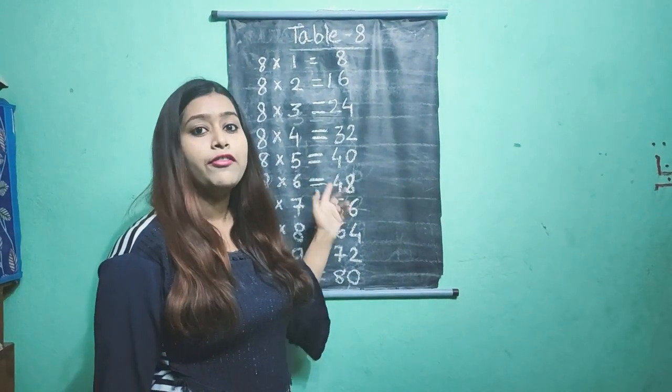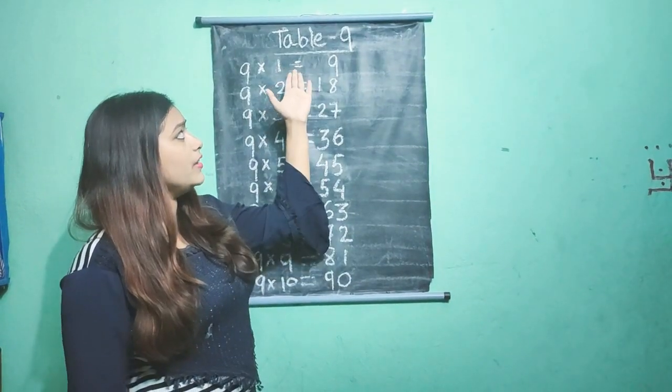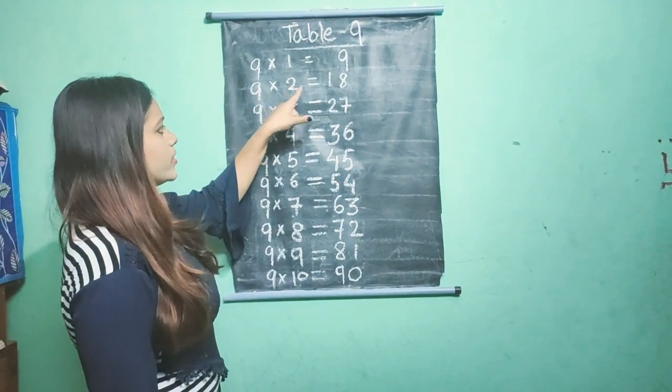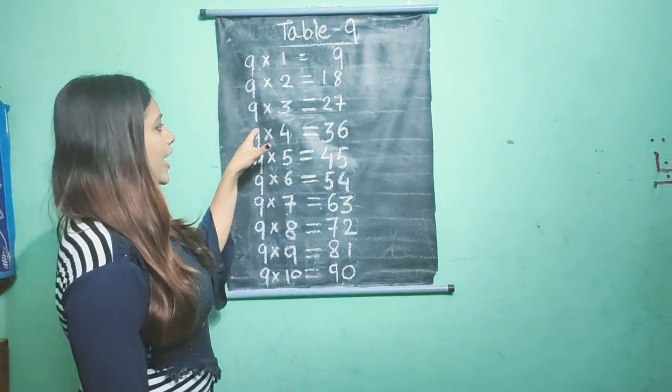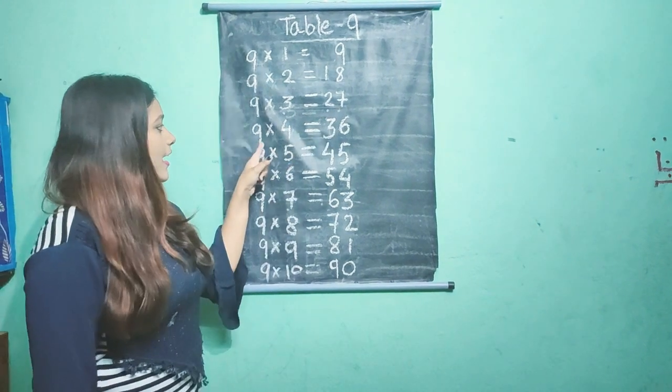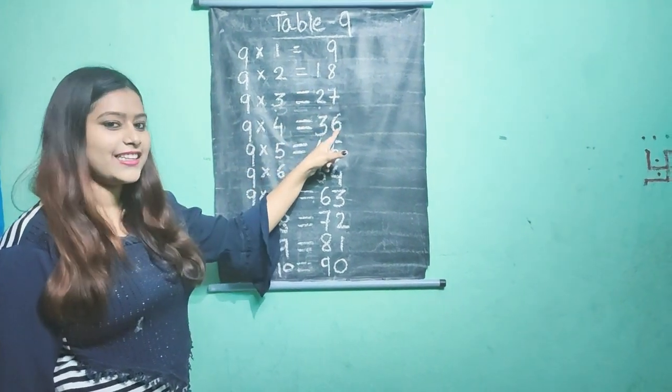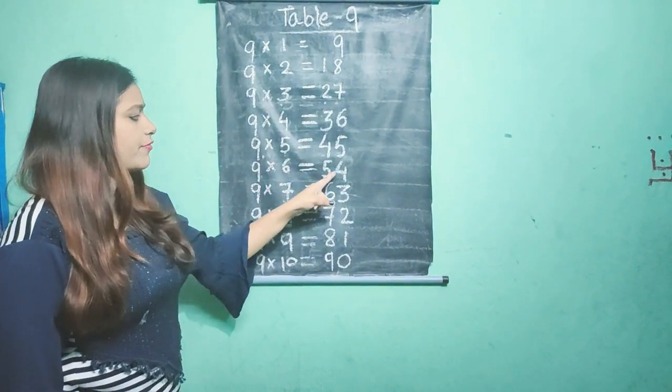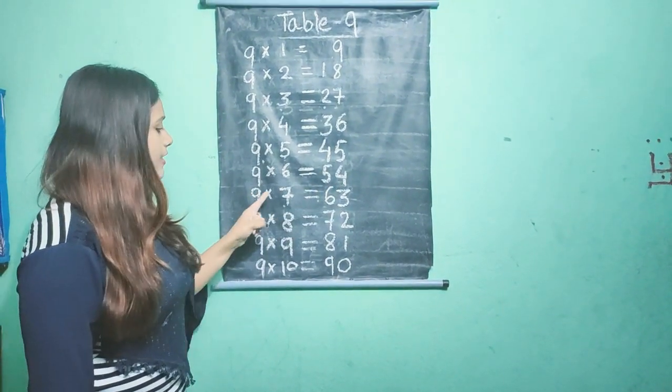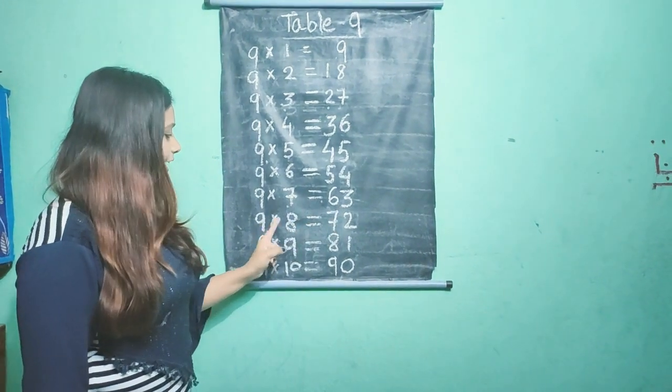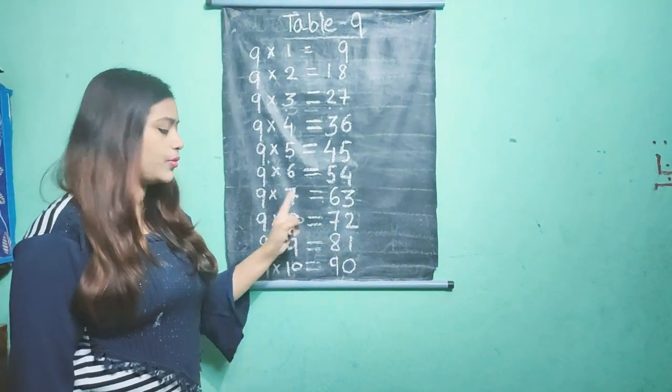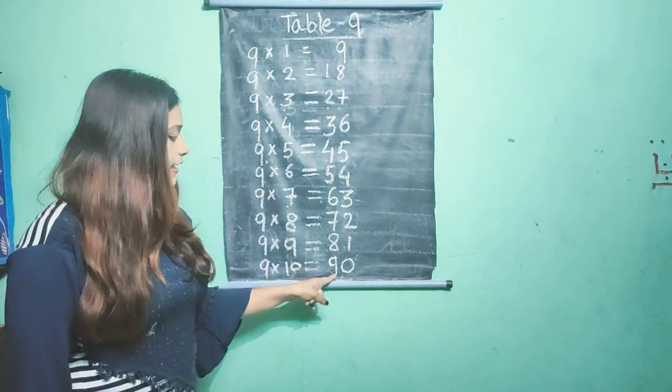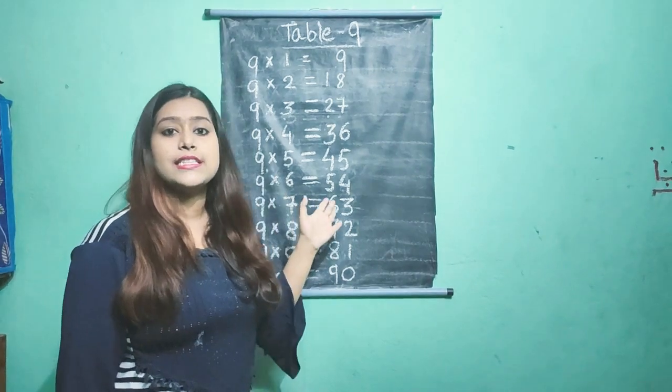So this is the table of 8. Now we will learn table 9. 9 ones are 9, 9 twos are 18, 9 threes are 27, 9 fours are 36, 9 fives are 45, 9 sixes are 54, 9 sevens are 63, 9 eights are 72, 9 nines are 81, 9 tens are 90. So this is the table of 9.